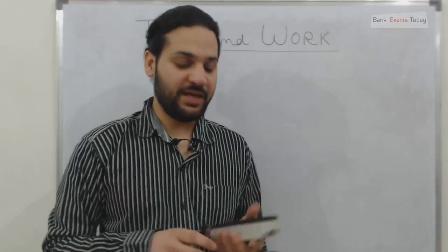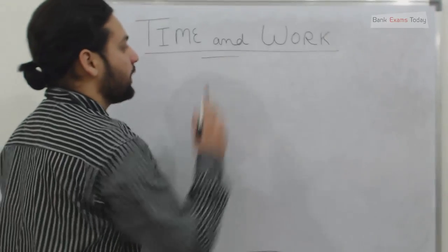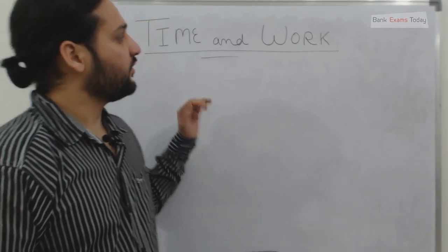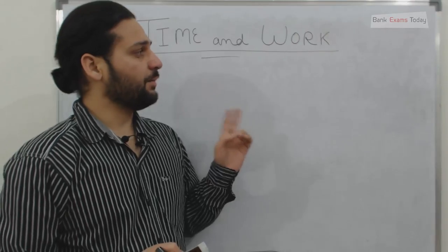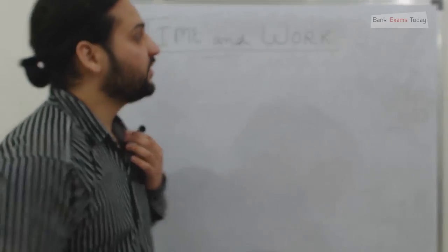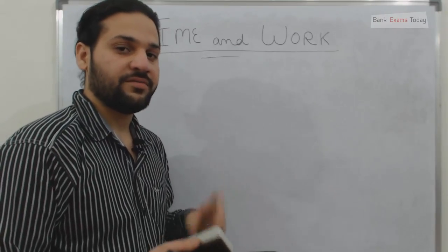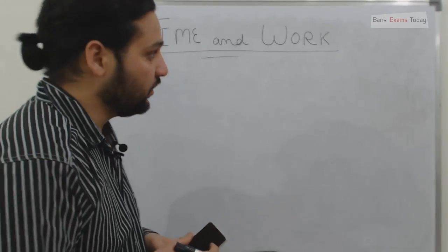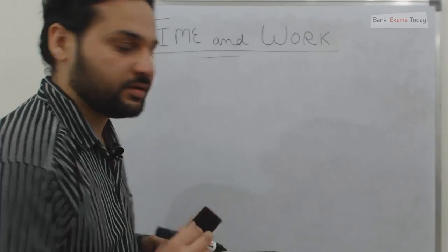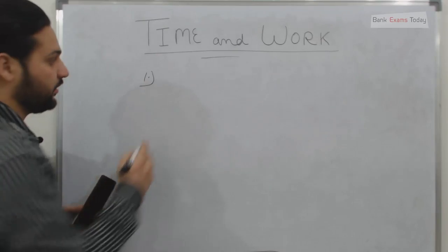Hello friends, welcome to Bank Exams Today. Today we are going to do the chapter Time and Work. This concept is used in cost accounting to determine how much labor is required for a particular job and to minimize cost. To solve these questions, we have two methods.